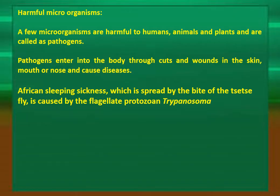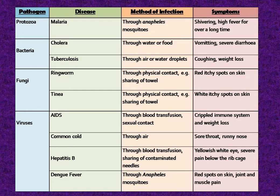Harmful microorganisms: A few microorganisms are harmful to humans, animals, and plants and are called pathogens. Pathogens enter the body through cuts and wounds in the skin, mouth, or nose and cause diseases. African sleeping sickness, spread by the bite of the tsetse fly, is caused by the protozoan Trypanosoma. Examples of diseases: Protozoa — malaria; bacteria — cholera; fungi — ringworm; viruses — AIDS, common cold, and other infectious diseases.